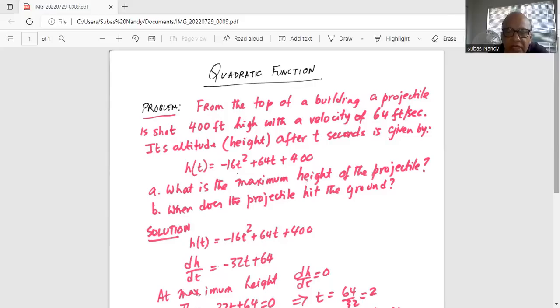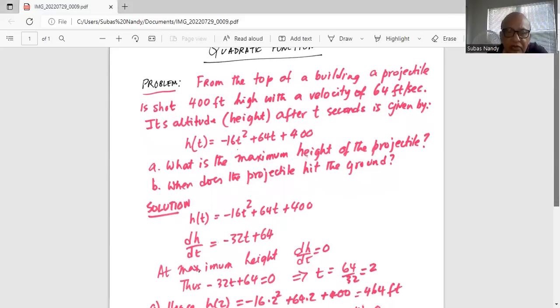So h of t is minus 16t squared plus 64t plus 400. At the maximum height, dh by dt equals 0. So we take the derivative of h with respect to t, first derivative, which is minus 16 times 2, 32, minus 32t plus 64.